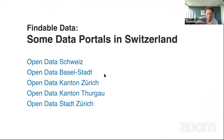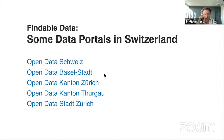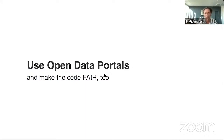We have a lot of data portals in Switzerland, and we need to use our own data for public publications in the public administration. Examples include Open Data Swiss, Open Data Basel-Stadt which has a really nice portal, the Canton of Zurich, Canton of Thurgau, and the city of Zurich. There are many open data portals, but a lot of people haven't even heard about them. So we need to use open data portals ourselves, and make the code FAIR too — findable, accessible, interoperable, and reusable.